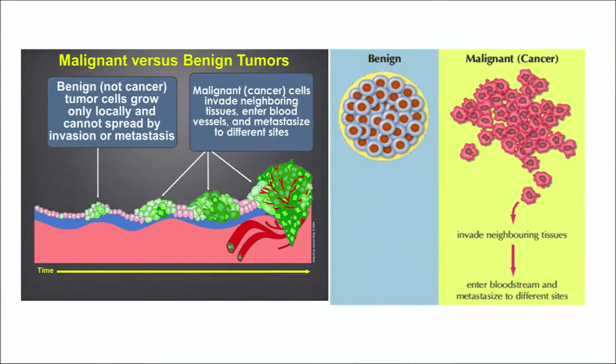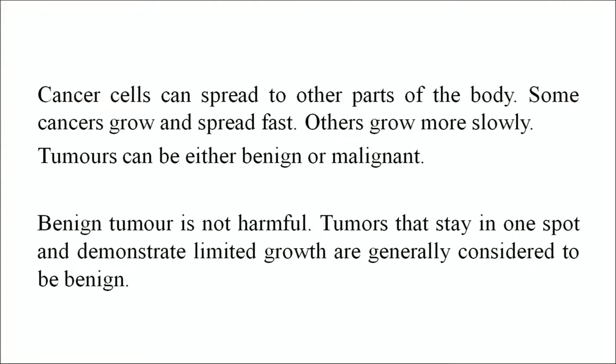One environmental health hazard is the carcinogens present in the environment. Carcinogens are cancer-producing agents in living tissues. Normal cells divide in an orderly way; they die when worn out or damaged and new cells take their place. Cancer occurs when cells start to grow out of control, keep on dividing and making new cells even when not required, crowding out normal cells and forming a mass of tissue called a tumor. Some cancers grow and spread fast; others grow more slowly. Tumors can be either benign or malignant.